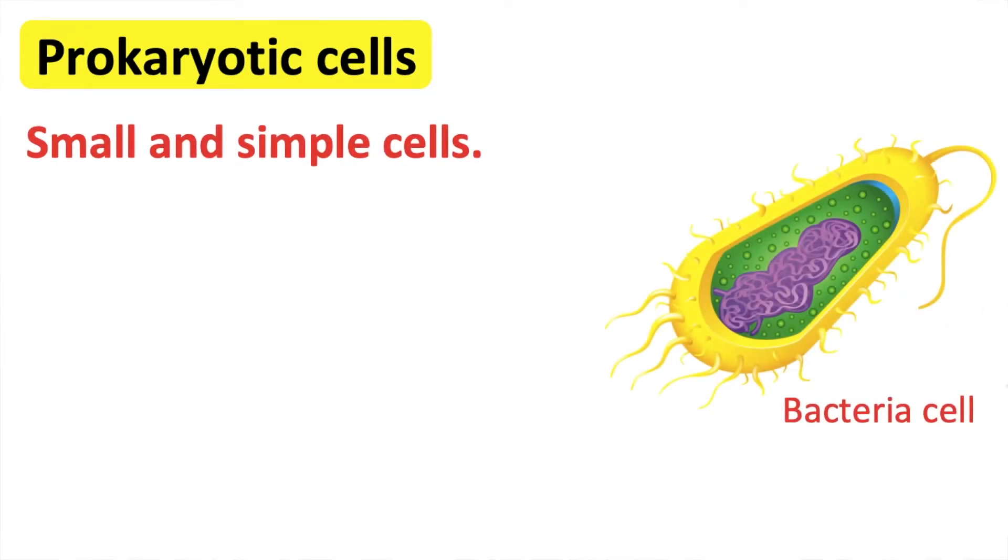Prokaryotic cells. These are small and simple cells. The genetic material of a prokaryotic cell are not enclosed in a nucleus. The genetic material is either in a loop or small rings of DNA. They are free-floating in the cell.